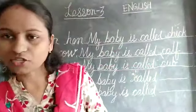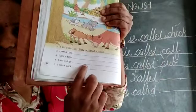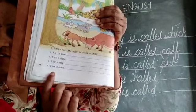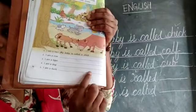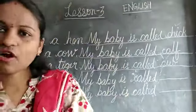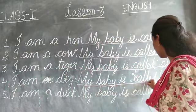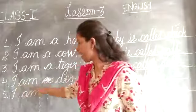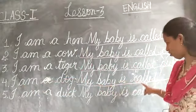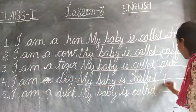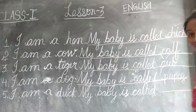Next one: I am a dog. You can see here, children — my baby is called puppy. I am a duck — my baby is called duckling. Okay, that you have to write. I am a dog — M-Y — my baby is called puppy — P-U-P-P-Y — because a dog's baby is called a puppy.